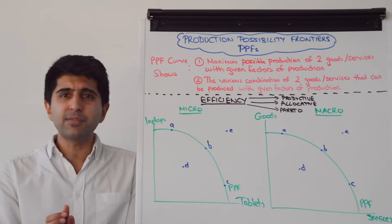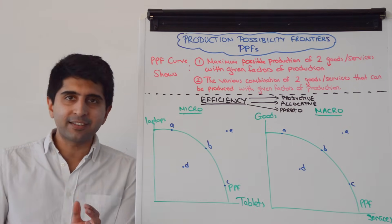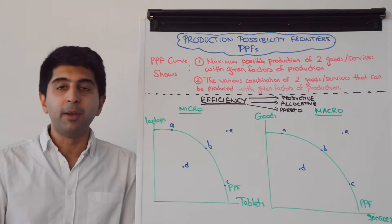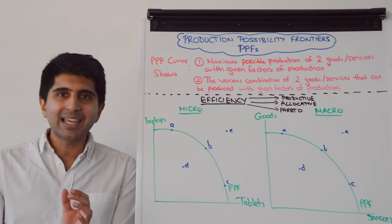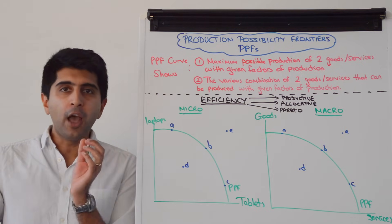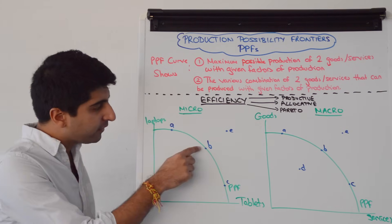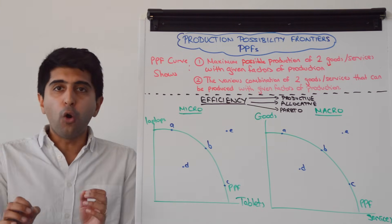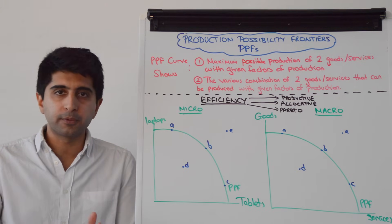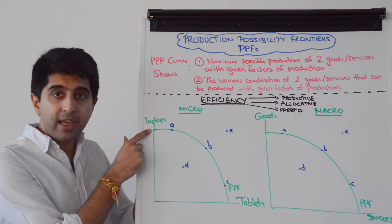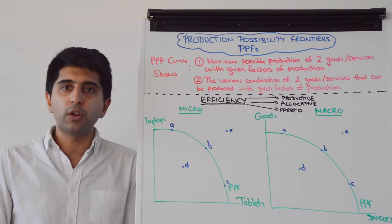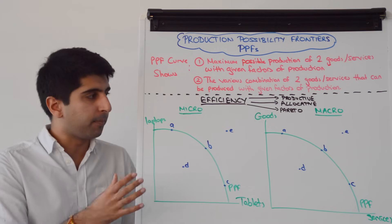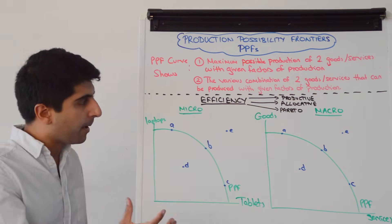What about allocative efficiency? Allocative efficiency is whether what's being produced is satisfying consumer demand — satisfying consumer wants, which is a very important concept given the basic economic problem. We cannot tell from a PPF diagram if allocative efficiency is being met because we don't know about consumer demand. So we need to know consumer demand to determine allocative efficiency — that's a very important thing to remember when drawing these curves.